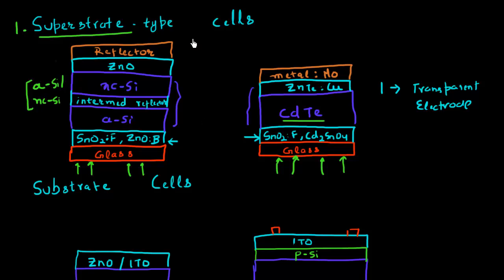So for this superstrate configuration, it needs to have a high thermal stability. That is one of the reasons why people use this fluorine based tin oxide, because it has a relatively higher thermal stability.